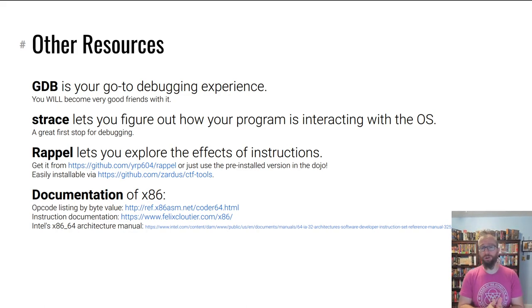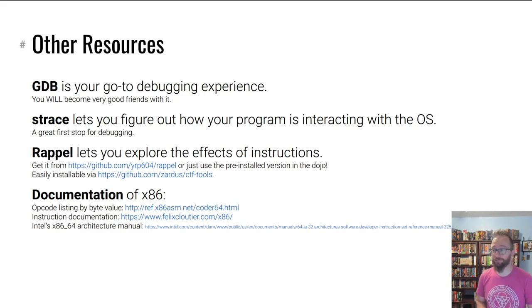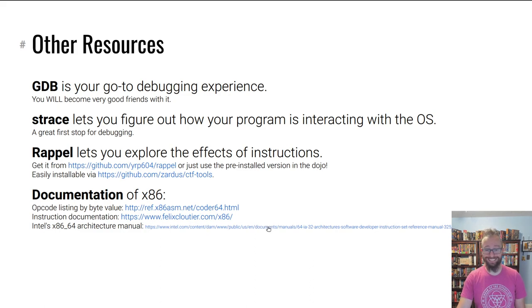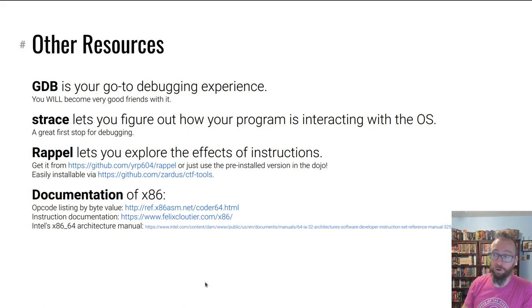Other useful tools: rappel — I mentioned it before — lets you explore individual instructions. It's already in the dojo, just run rappel. Also, x86 is widely documented. The nuclear option is the architecture manual created by Intel — thousands of pages long. Felix Cloutier maintains a nice clickable instruction listing, and there's a reference of every x86 instruction with its byte encodings — very useful for later modules. Thank you for following along on this assembly journey. It's the truest, simplest, and maybe even the funnest programming language. Now go to the dojo, tackle those challenges, and good luck!